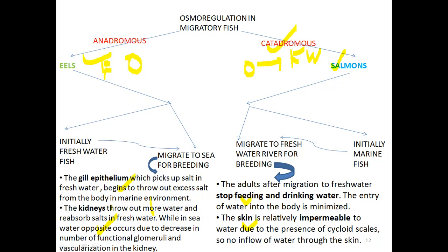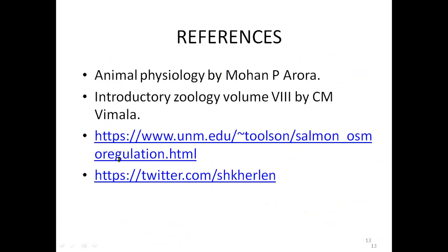For example, eels when traveling to the ocean drink a lot of water, and chloride cells and kidneys excrete the excessive salts entering the body. Salmons when entering freshwater stop feeding and stop drinking water, their body becomes impermeable to water, kidneys start conserving the salts that would otherwise be lost through urine, and chloride-secreting cells actively reabsorb a lot of salts to maintain the osmoregulatory balance of the body. That is it regarding migratory fish osmoregulation mechanisms — thank you all for watching.